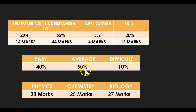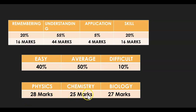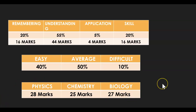The difficulty split is: Easy 40%, Average 50%, Difficult 10%. Subject-wise marks out of 80: from Physics you can score 28 marks, from Chemistry 25 marks, and from Biology 27 marks.